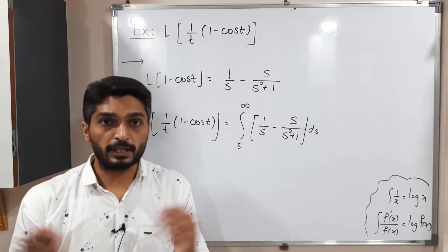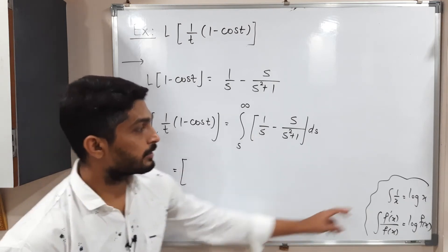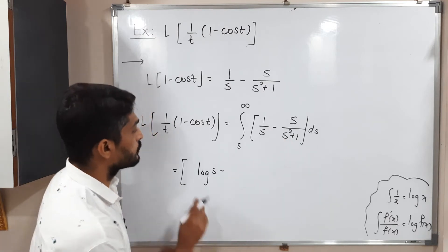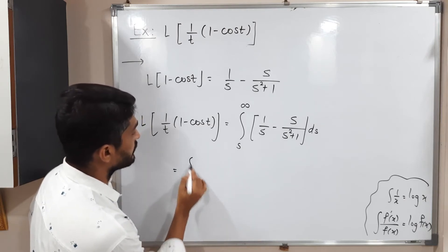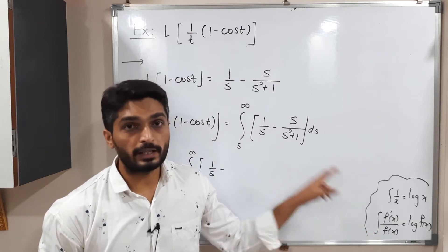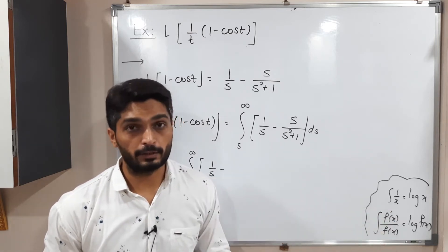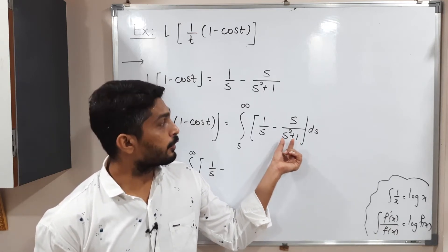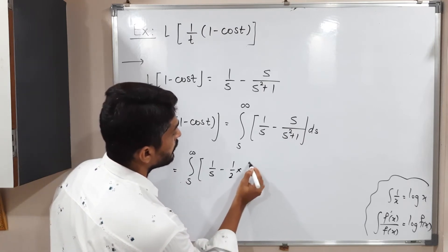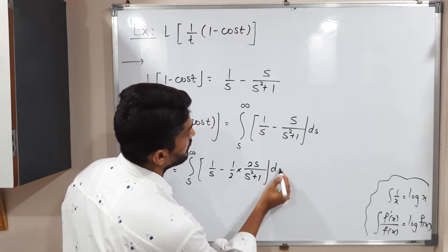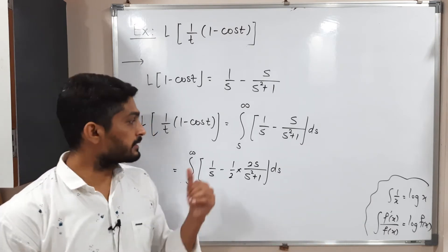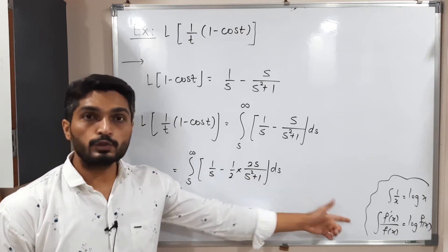Since there is a minus sign, we take separate integration. The integral of one by S using the first formula gives log S. For the second term S upon S squared plus one, we cannot take integration directly. The derivative of the denominator is 2S, but only S is at the numerator. So we adjust by writing one half into 2S upon S squared plus one, making the derivative of the denominator appear at the numerator so we can apply the second formula.